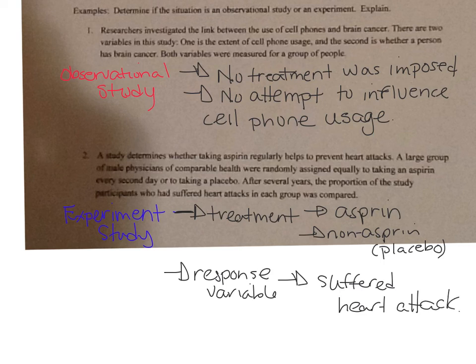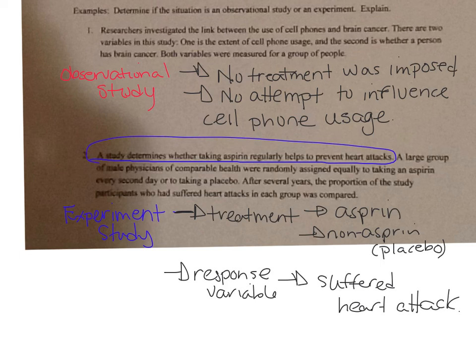What you need to be able to do with experiments is: if given the first line — 'a study to determine whether taking aspirin regularly helps prevent heart attacks' — you would need to design the experiment. That means taking two different groups, one taking an aspirin and one taking a placebo, and then comparing them. All right, that's it — see you tomorrow in class, have a good night.